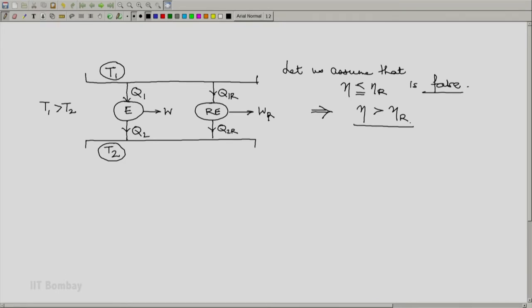To see the consequence of this, we will adjust the two engines first in such a way that Q1R equals Q1. This is an adjustment we will do as we have done earlier. Then we will notice that the efficiency of our heat engine is W by Q1, the efficiency of our reversible heat engine is WR by Q1. Notice that Q1R is assumed equal to Q1.